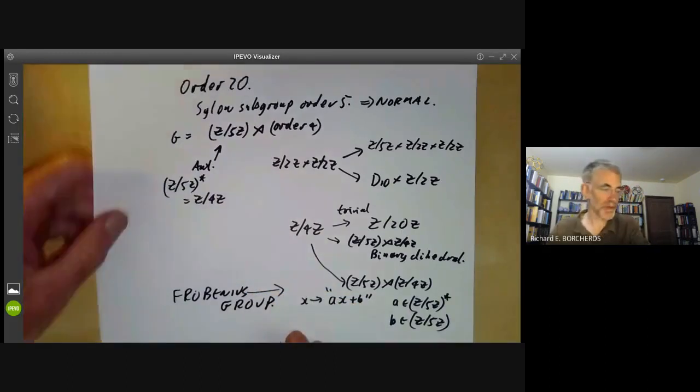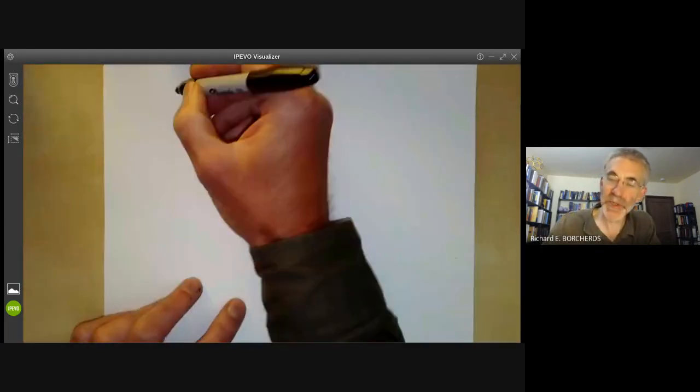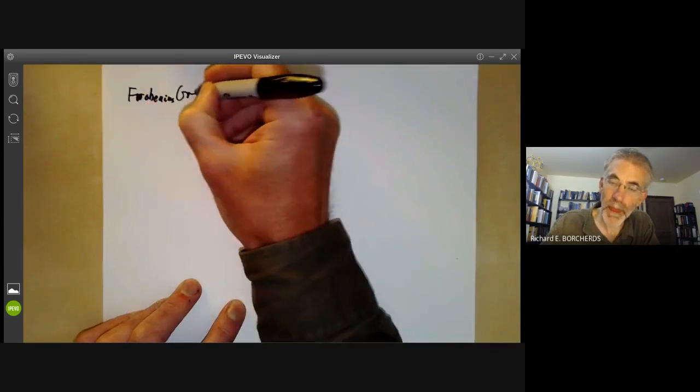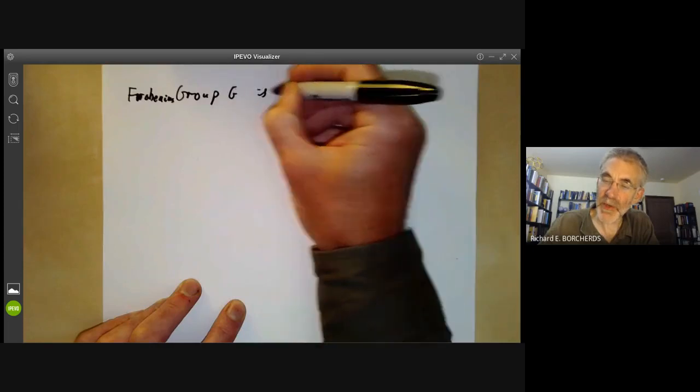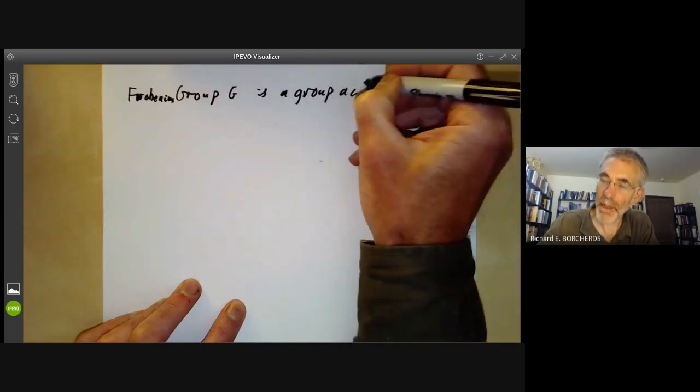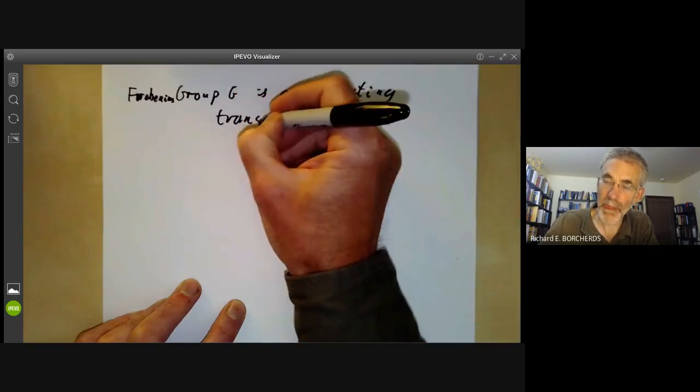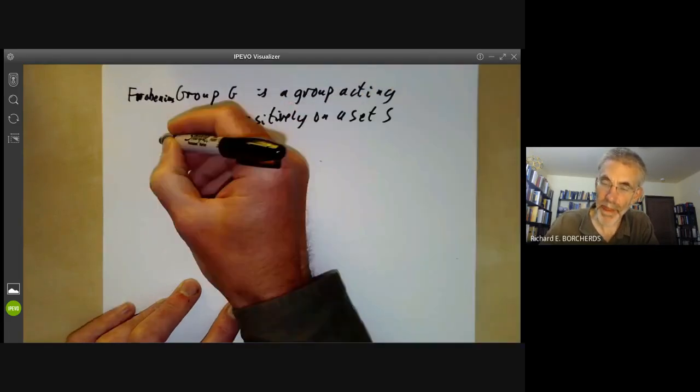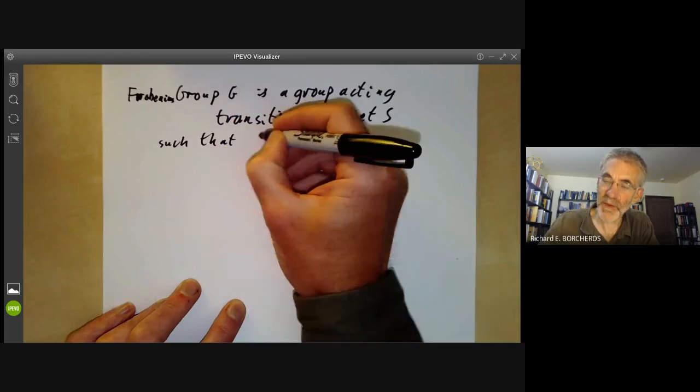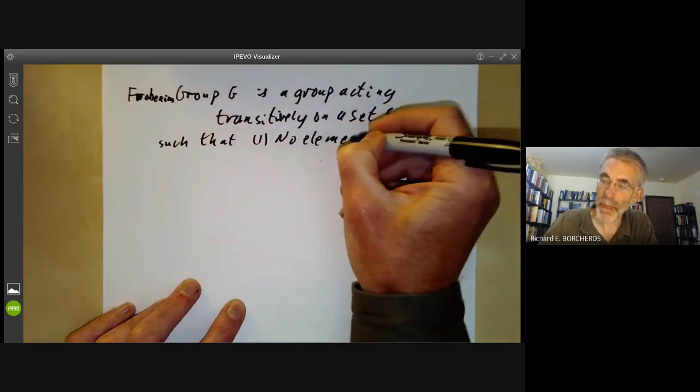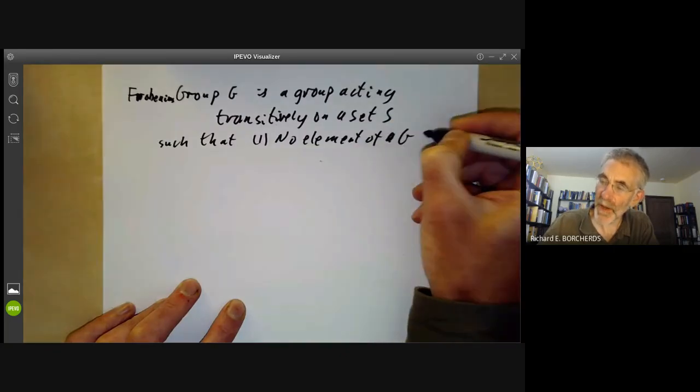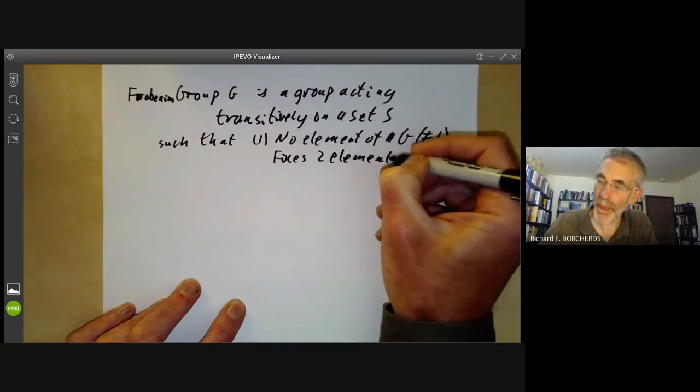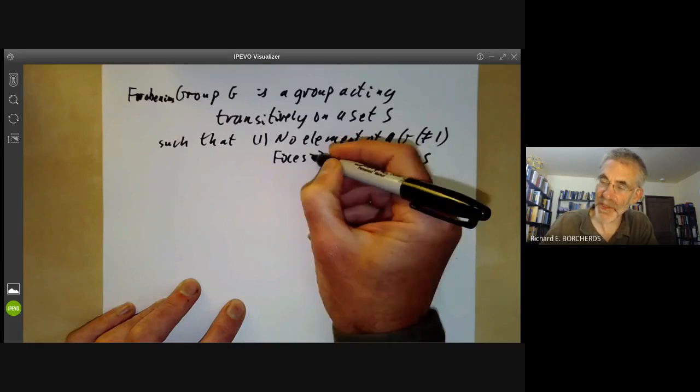So what is a Frobenius group? Well a Frobenius group G is a group acting transitively on a set such that first of all, no element of G other than one fixes at least two elements of S.